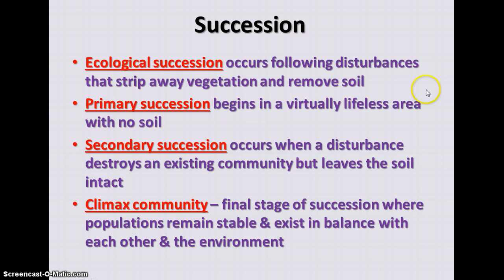Usually the first organisms to colonize these areas will be lichens. Lichen is a symbiotic relationship between a fungus and an algae — the fungus provides attachment and collects water for the algae, while the algae provides food for both. The fungal part releases chemicals that break down the rock and produce soil, allowing more plants to start growing.